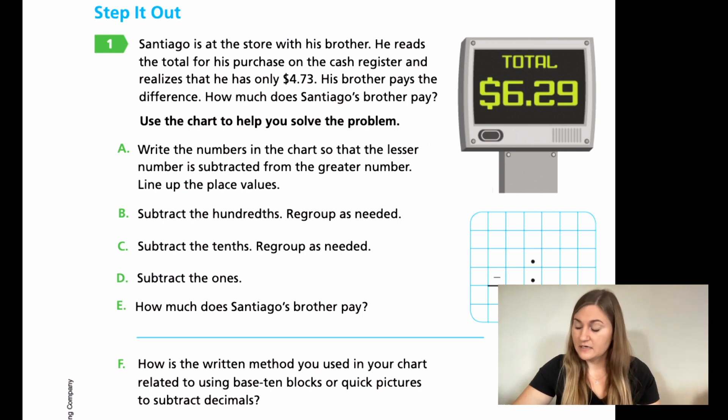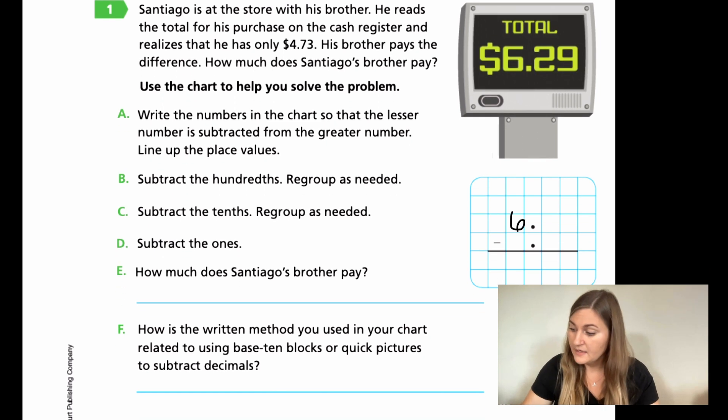It doesn't matter how many digits are in that number. Go based on the value of the number. So when I need to write down my numbers in the chart, I have a six in front and then I have my decimal and then I have my two and my nine underneath it. How much money he had was the $4 and 73 cents. So the four goes in front of the decimal and then the 73 goes underneath it.